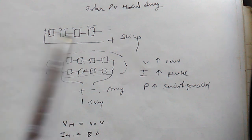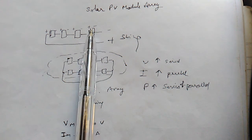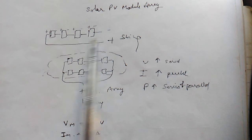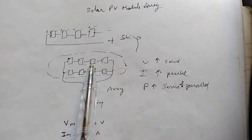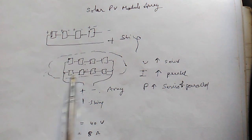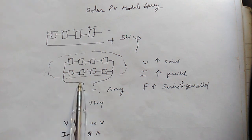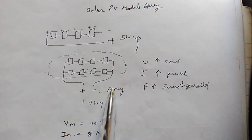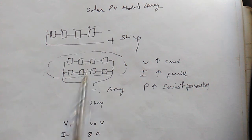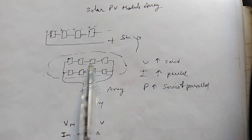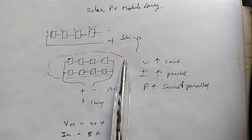Today we are going to learn about solar PV module arrays. A solar module has positive and negative terminals. When four modules are connected in series, that is called a string. When two or more strings are connected in parallel, the combined output — a single positive and single negative — is called an array.